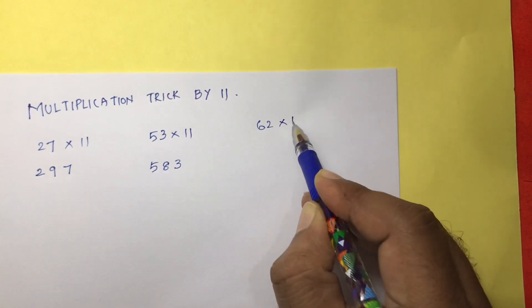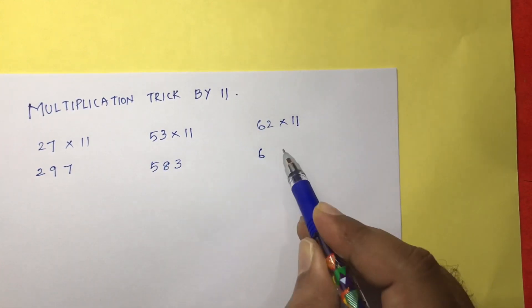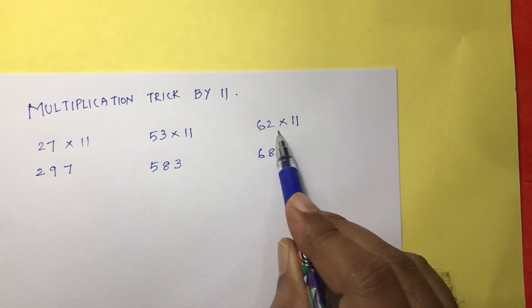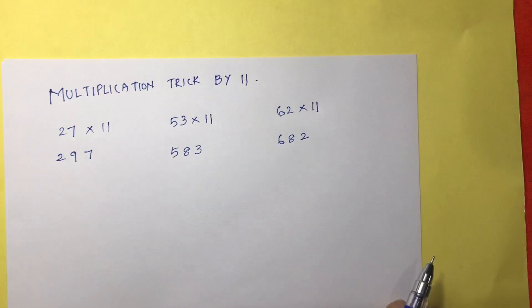Take 62 into 11. So write here 6, 2. 6 plus 2 is 8. So 62 times 11 is 682.